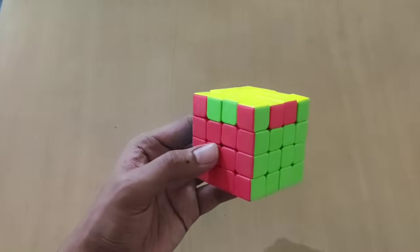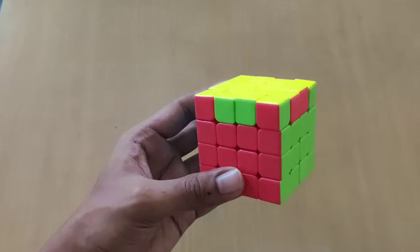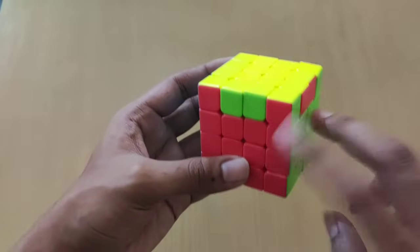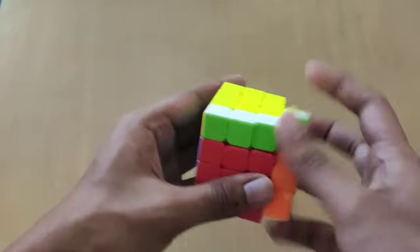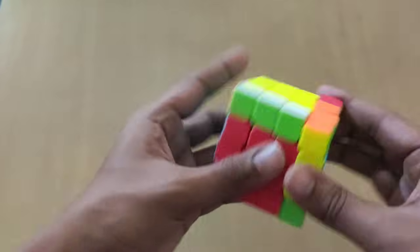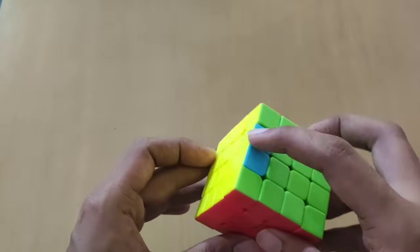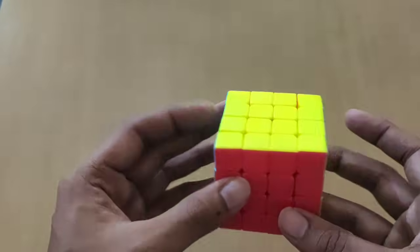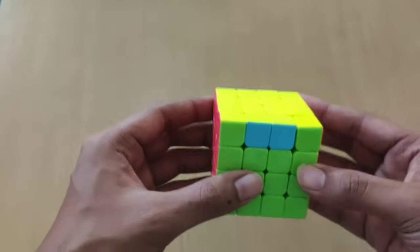Now if you look at this case, this is also corner parity, but it seems like the edge is misaligned. But there is one more case, let me show you the other case also. So these two cases are also corner parity. If you apply the corner parity formula, it will be solved. Let me just show you how.